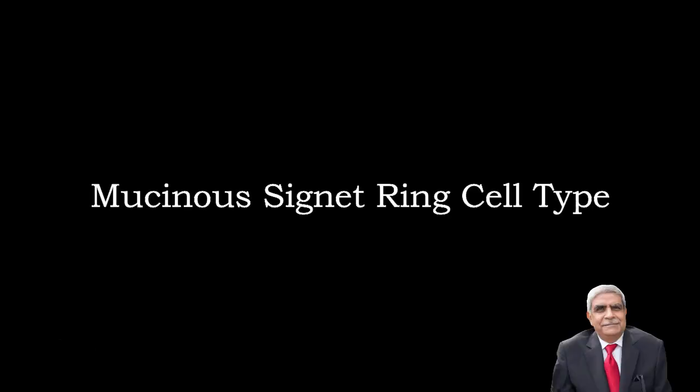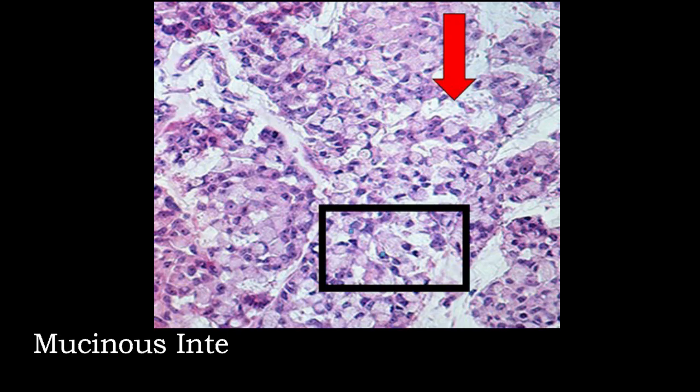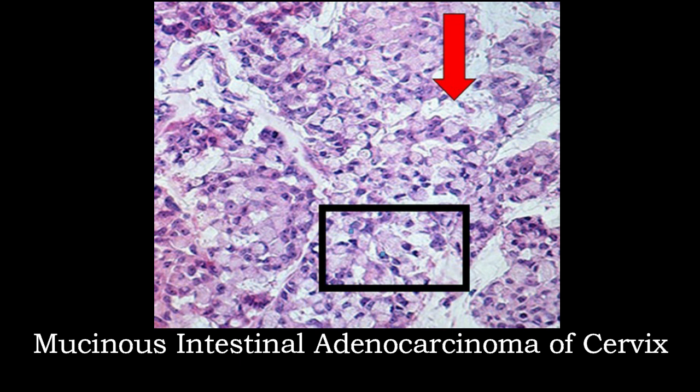Another subtype is the mucinous signet ring cell type, in which the nuclei are pushed to the periphery with abundant intracytoplasmic mucin. This photograph shows that signet ring cells are marked with red arrows, whereas the black rectangle shows a large number of cells present in groups exhibiting features of signet ring cells.